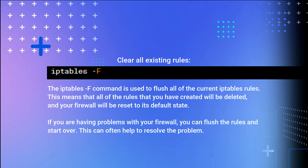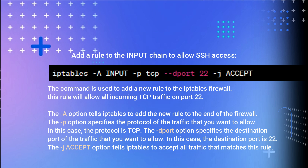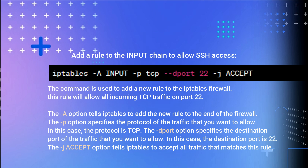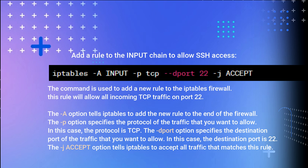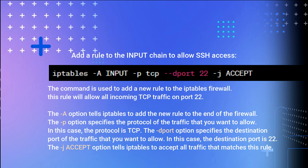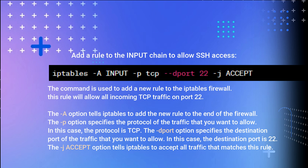Add a rule to the input chain to allow SSH access. This command is used to add a new rule to the IP Tables firewall that allows all incoming TCP traffic on port 22. The -A option appends the new rule to the end of the chain. The -p option specifies the protocol, in this case TCP. The --dport option specifies the destination port, in this case 22. The -j ACCEPT option tells IP Tables to accept all traffic that matches this rule.